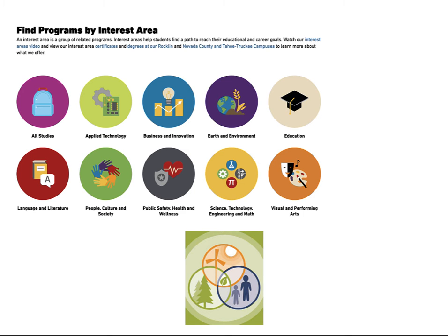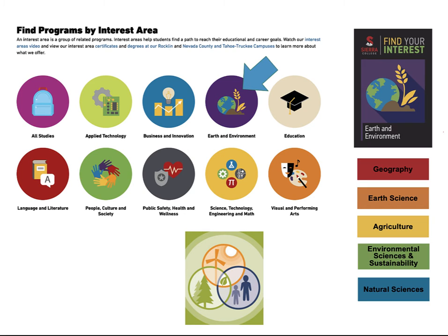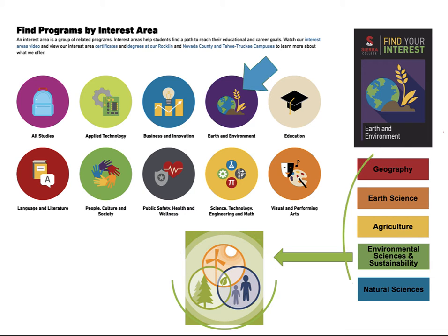When you visit the academic programs page on the Sierra College website, you'll find the ESS department in the earth and environment interest area. In the online catalog, look for this logo depicting the triple bottom line of sustainability, symbolizing the need to consider the interactions of humans, the environment, and cultures. Other programs in the earth and environment interest area are earth science, natural sciences, geography, and agriculture.